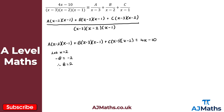If I let x = 3, then (3-3) = 0 makes the B and C terms disappear, so I solve for A. I get A(3-2)(3-1) = A(1)(2) = 2A, and on the right: 4(3) - 10 = 12 - 10 = 2. So 2A = 2, therefore A = 1.